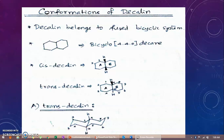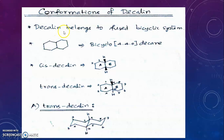Let's return to the topic: conformations of decalin. We know decalin belongs to a fused bicyclic system. In a bicyclic system we have fused, spiro, and bridged bicyclic systems. Decalin is an example of a fused bicyclic system.